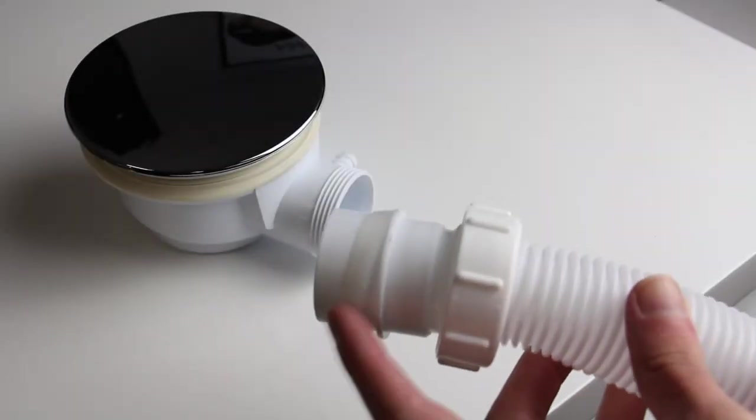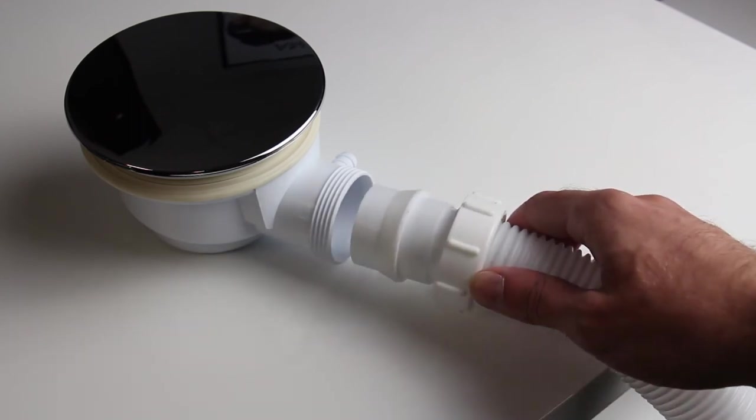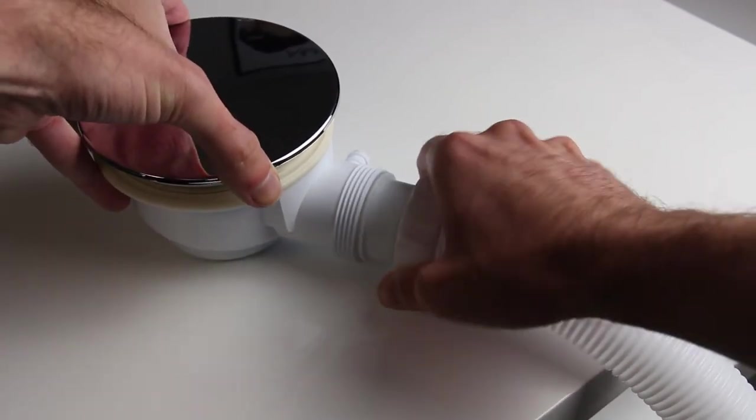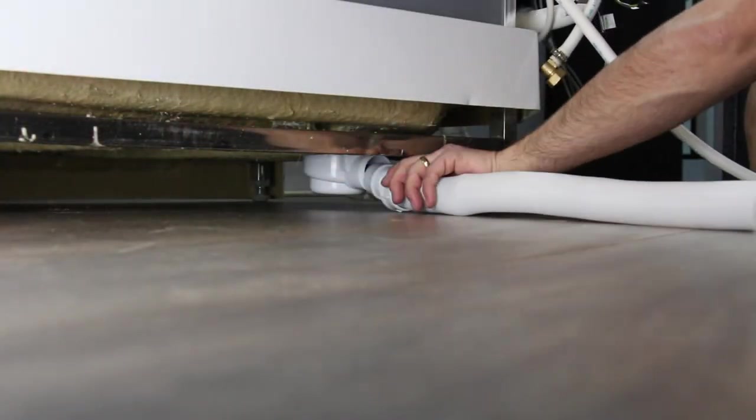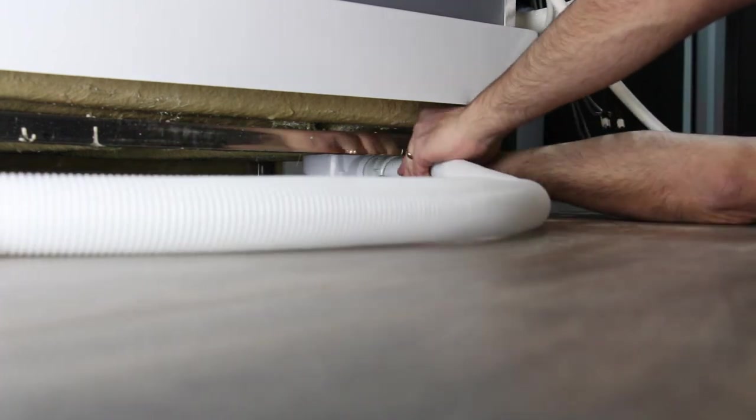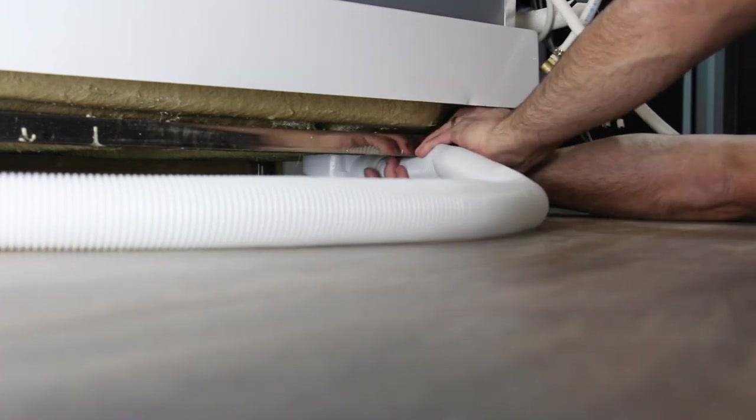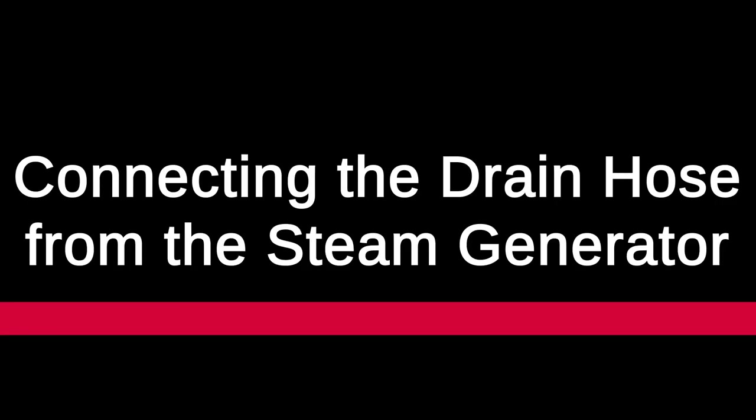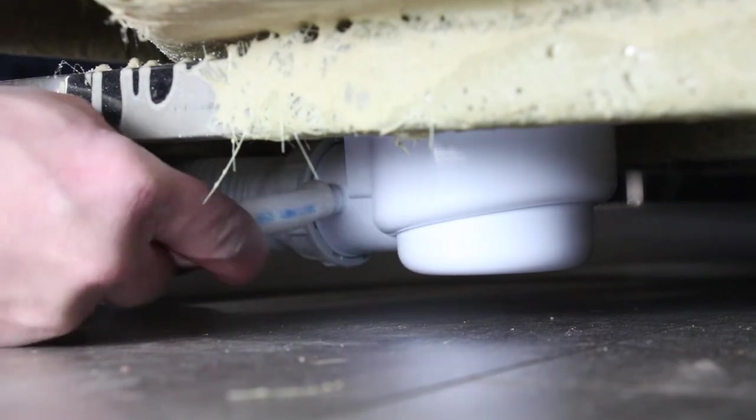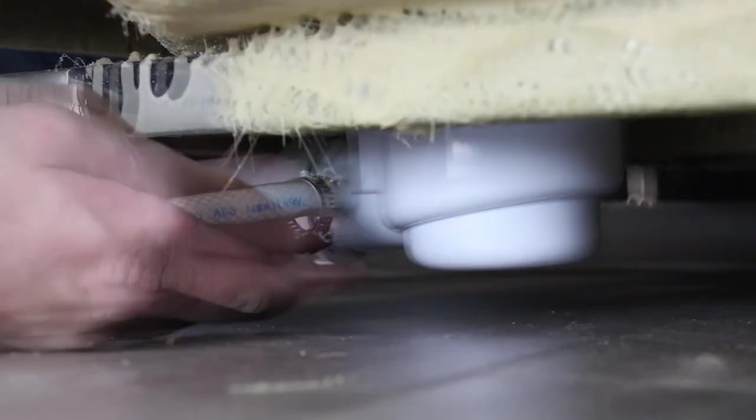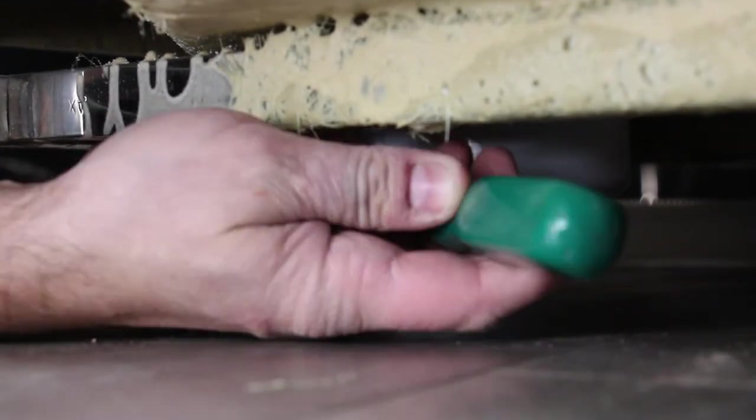To connect the waste hose, simply screw it onto the waste outlet under the tray. Ensure that the rubber seal sits into the waste before screwing it up. Push the PVC hose onto the waste spigot and tighten in place using the jubilee clip.